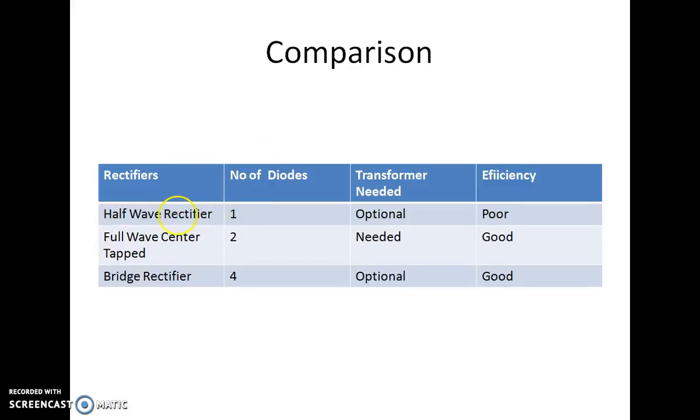The last slide compares the half wave rectifier, full wave rectifier and bridge rectifier with the parameters which we have seen up till now. Half wave rectifier has one diode, the transformer which is connected can be optional and the efficiency is very poor because only half of the cycle is coming at the output.